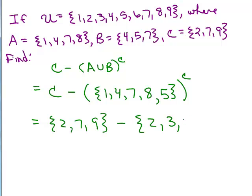Two, three, there's a five. How about a six and a nine? Right? Those are all the numbers in the universal set that are not one, four, seven, eight, or five.